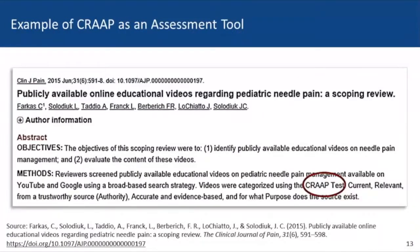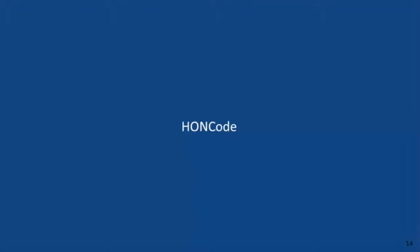This last slide shows an example of a scoping review that used the CRAAP test to evaluate the quality of online videos. Going through each website and evaluating it for currency, relevancy, authority, accuracy, and purpose can be time consuming.